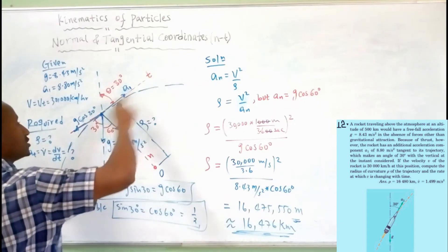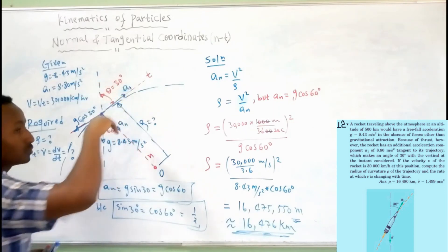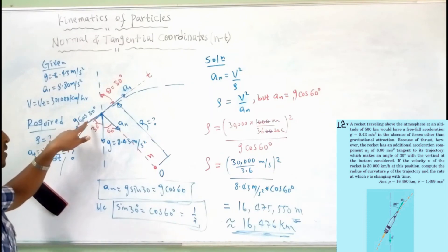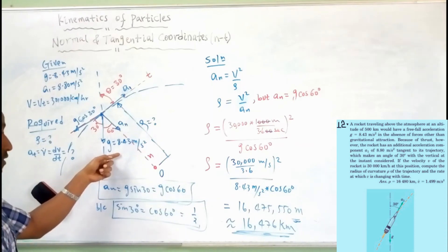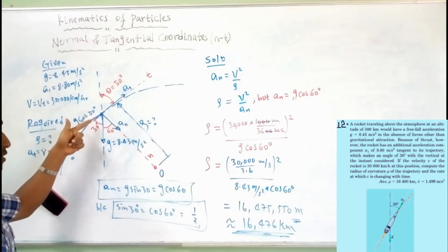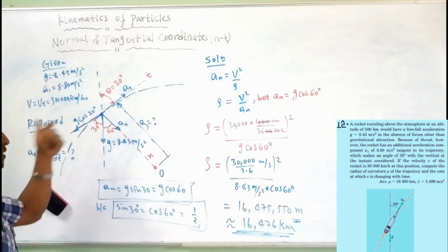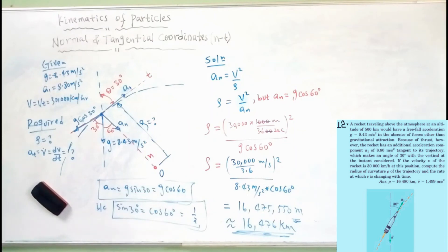We put the acceleration in the tangential direction. A1, or acceleration due to the thrust force of the rocket. Due to gravitational acceleration along the tangential axis: g cos 30 degrees. Along the normal direction: g sin 30 degrees, or equivalently g cos 60 degrees.